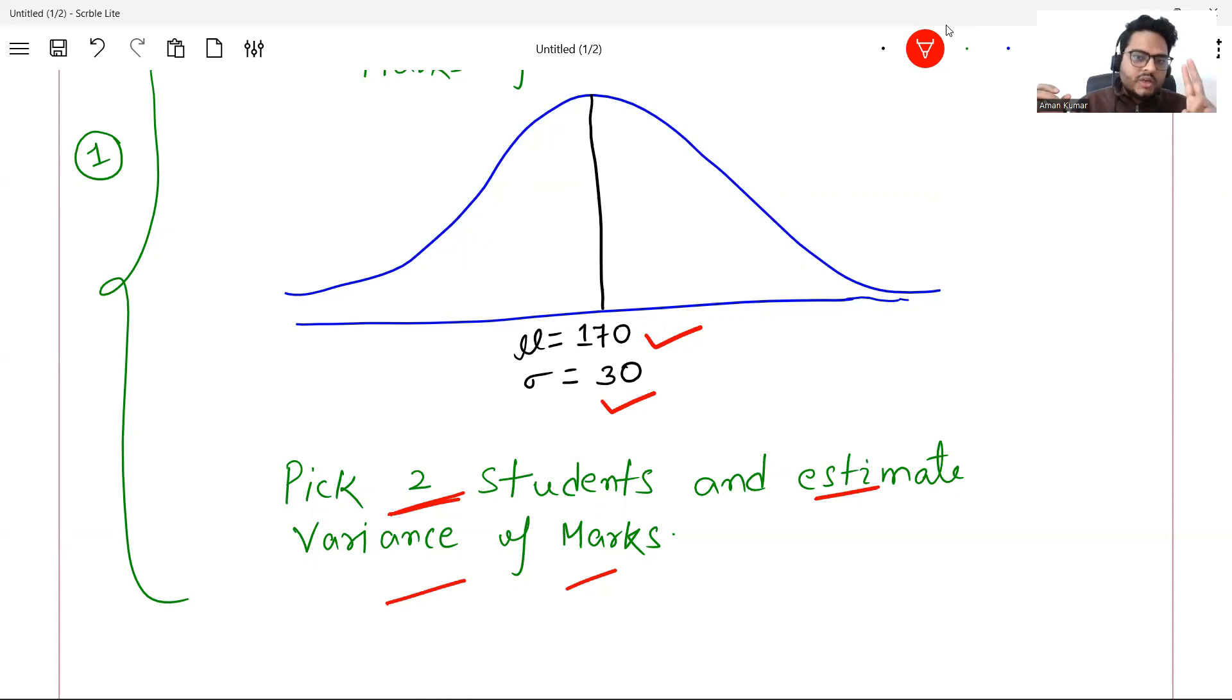Try to estimate variance of marks. Try to understand this. In a class there can be many students, but I'm telling you pick two students and try to estimate the variance of the class. You can choose two students from anywhere, randomly. From those two students only, you will try to estimate what is the population variance. So these two students will be called as a sample and this entire class of students will be called as a population. That is the base of inferential statistics, which means we try to estimate the properties of a population from sample. That is sample versus population.